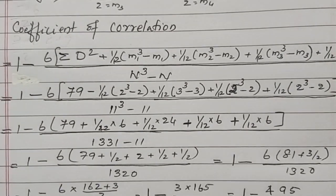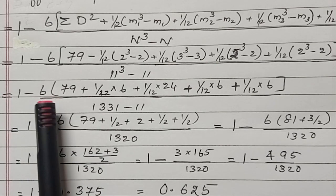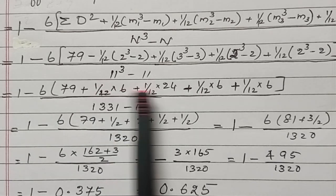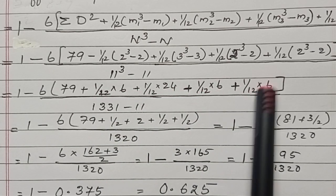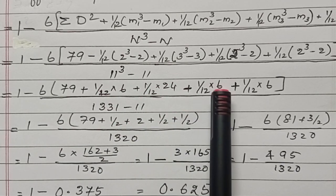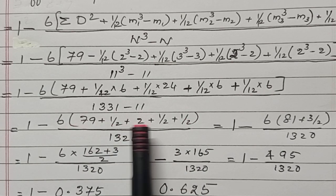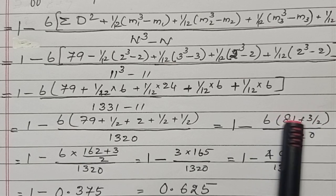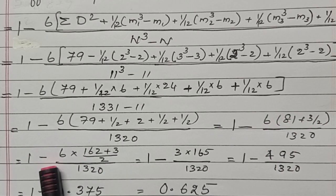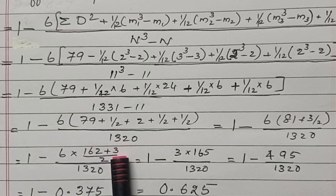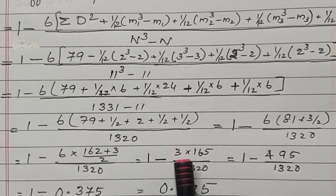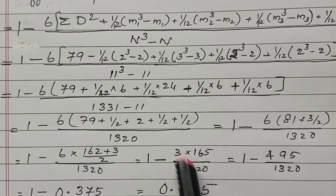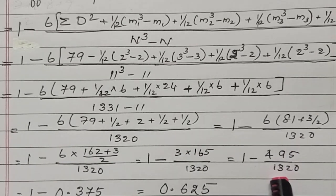After doing all these calculations, we have to multiply by 6. 1/2 plus 1/2 equals 3/2. After doing all the addition, we multiply by 6. 1 minus 6 into, taking the LCM, 162 plus 3 by 2. The answer is 165. 6 by 2 is 3. Into 165. 162 plus 3 is 165. Multiplying these two, 495 divided by 1320.